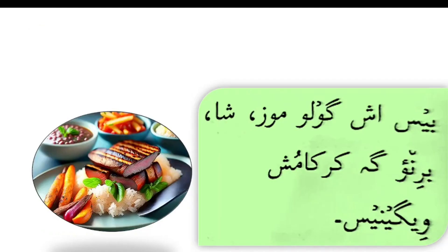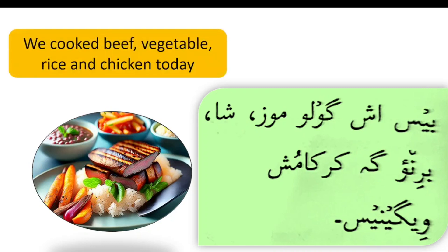Bes ash below moats, shah, breunga, karkamush veginat. We cooked beef, vegetable, rice and chicken today. Bes means we, ash means today, below moats means beef, shah means vegetable, breunga means rice. Ga in Shana stands for and. Karkamush means chicken. Veganes means cooked.